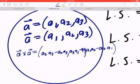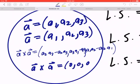So this is the reason why, when you work this out, any vector, for example a cross a, will give you zero, zero, zero, which is basically a zero vector.